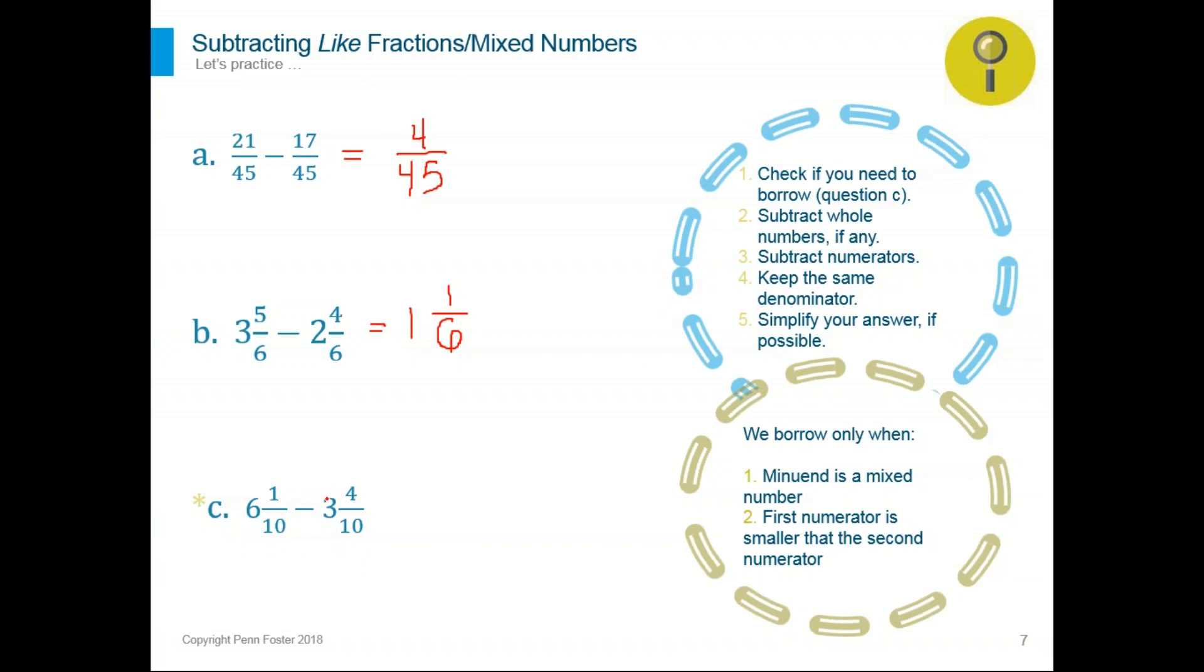The way we're going to borrow is we have to take a 1 out of the 6. The 6 will go down to a 5. And then the fraction part for that first mixed number will consist of two fractions. The one I borrowed, I can rewrite it as 10 over 10, which is a 1. And then plus the original fraction, 1 over 10. These two fractions is the fraction part of the mixed number. Minus, we still have to subtract, minus 3 and 4 over 10.